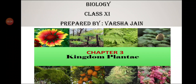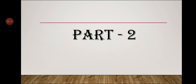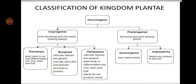Hello students, today we are studying biology class 11th chapter number 3, kingdom plantae. This chapter we have started in our last lecture. Today is the second part of this chapter, the second lecture on kingdom plantae. Kingdom plantae is divided into two categories: cryptogams and phanerogams. Cryptogams are divided into thallophytes, bryophytes, and pteridophytes, and phanerogams is divided into gymnosperms and angiosperms. Today we will study about bryophyta.